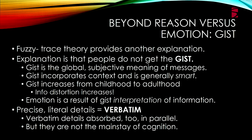Fuzzy trace theory — the fuzzy traces are gist representations of information — says there's something else beyond reason versus emotion: the global subjective meaning of messages. People, including scientists, don't operate on the basis of objective, rote, memorized facts. We operate on the basis of our meaningful interpretation of those facts, incorporating context. And it's actually generally smart, because kids are more literal, and as you get older, adults become more gist-based.